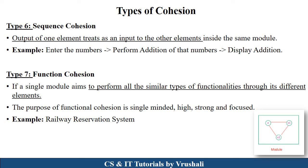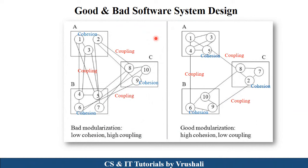In software engineering, using low cohesion and high coupling — where modules A, B, and C are all interrelated with high coupling, while internal classes have little relation — generates a bad design that is complex to understand. On the opposite, low coupling with high cohesion — where modules share only some information and all internal classes are interrelated — provides a good software design which is easy to understand.